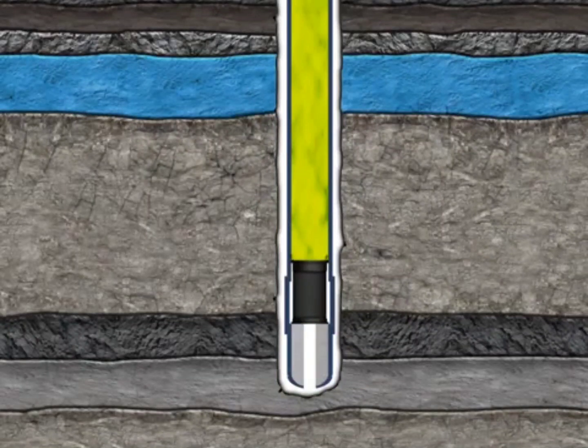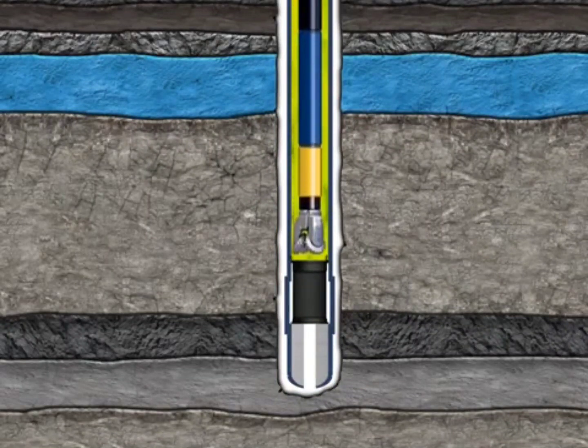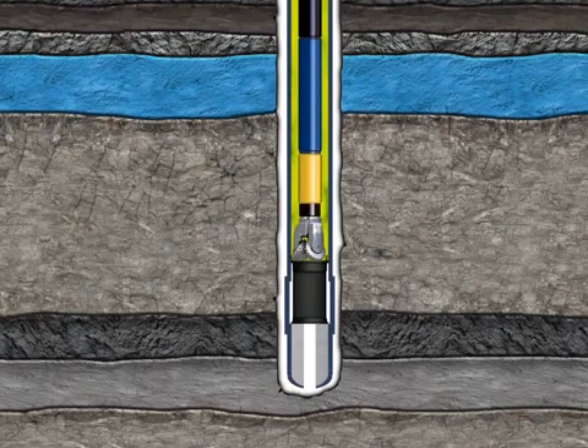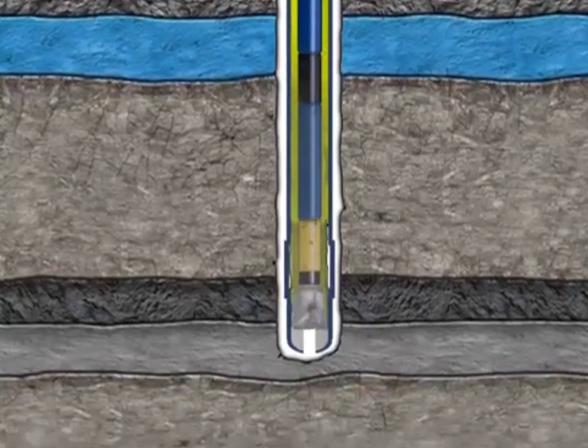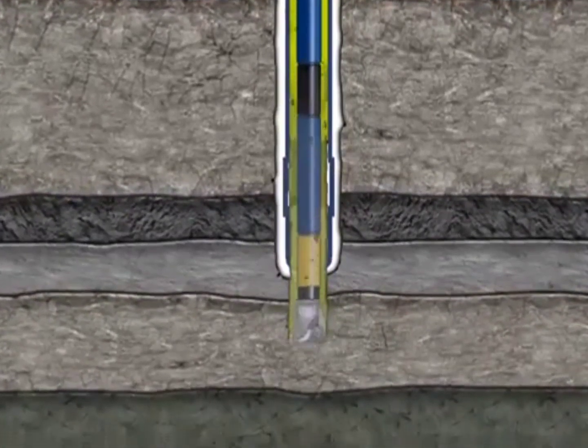The drilling then continues through the wiper plug, the casing shoe, and the cement at the bottom of the hole until the desired depth is reached. This is called total depth, or TD, and is where the payzone is anticipated.